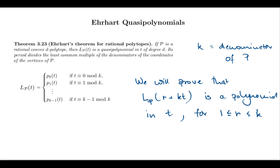So, what we'll do now is we're going to fix the denominator k. We'll fix an r between 1 and k and then just consider t as my variable. I'm looking at dilations of the form r plus kt.